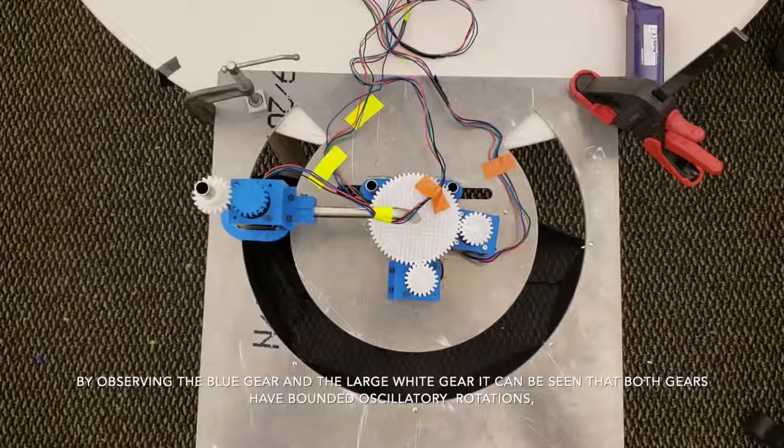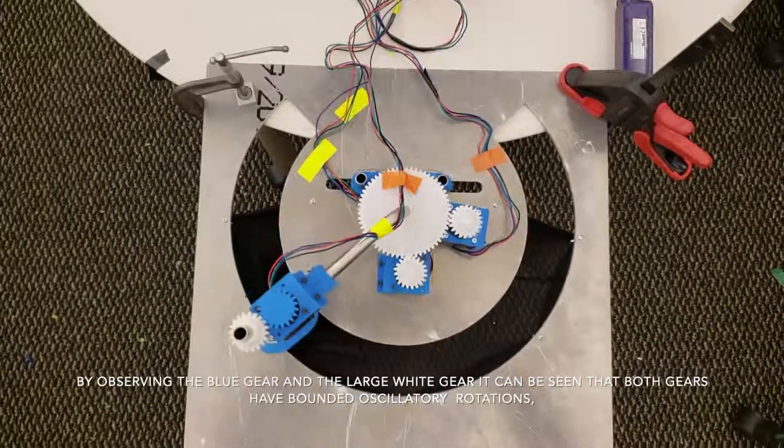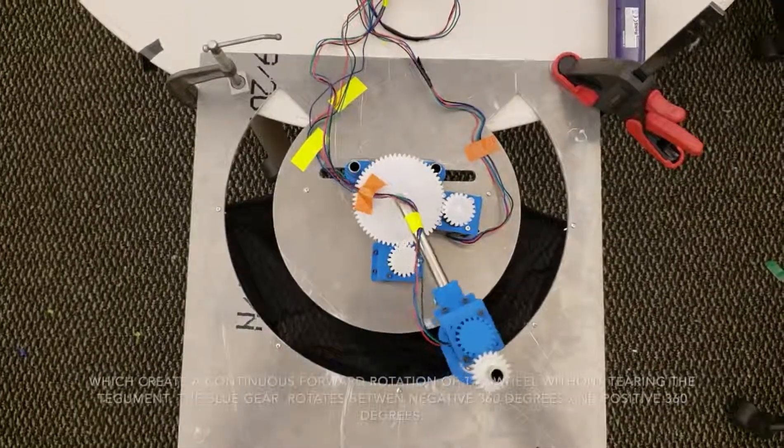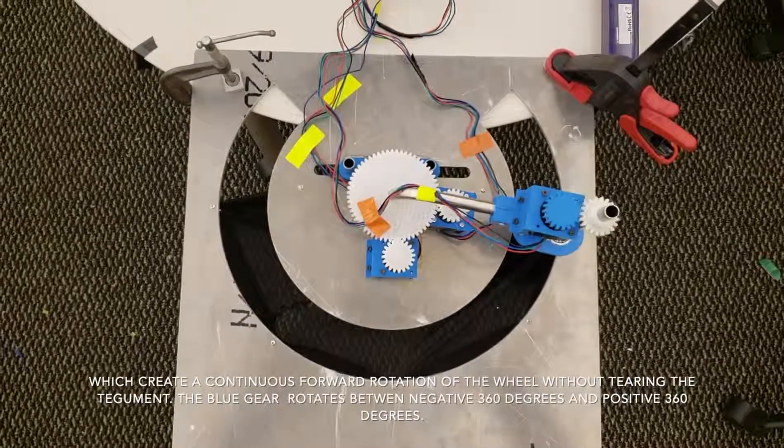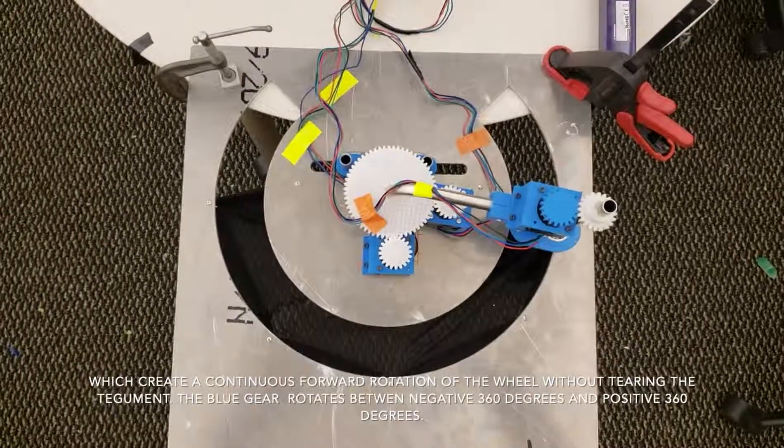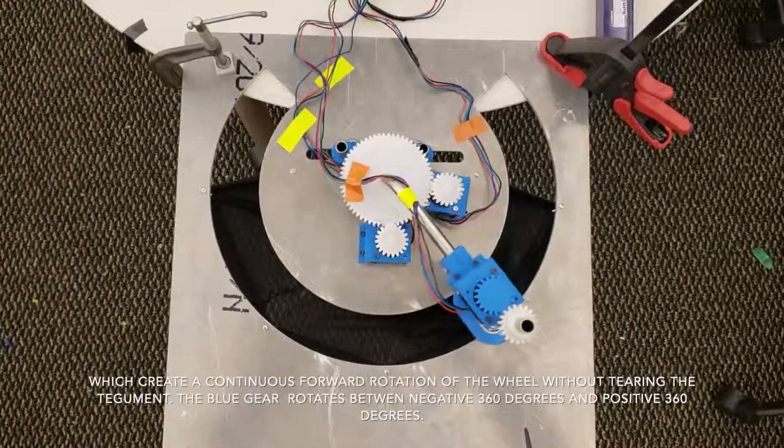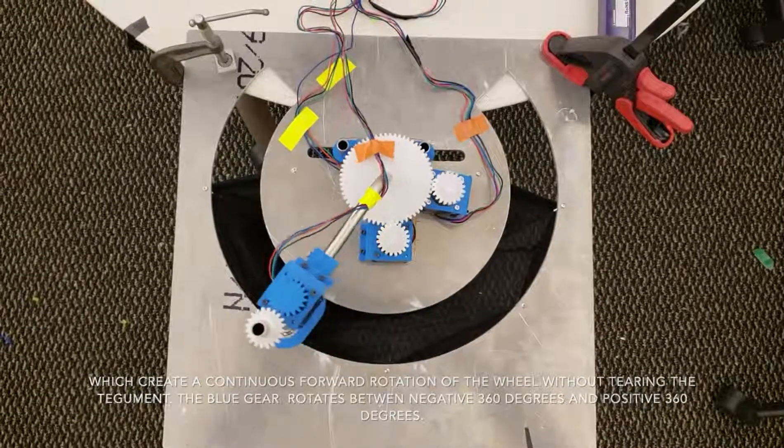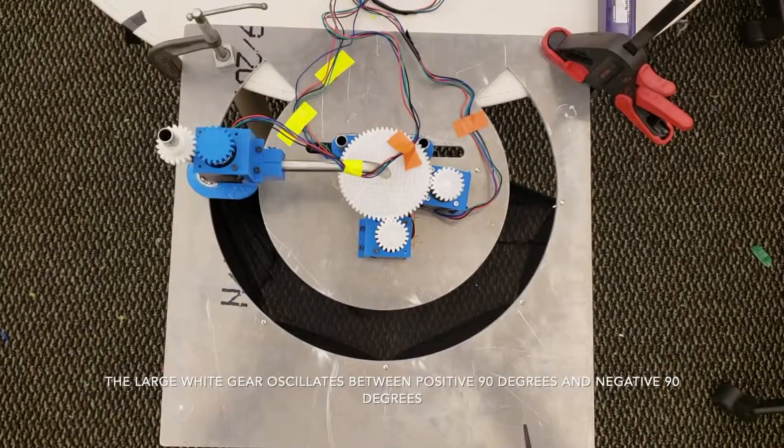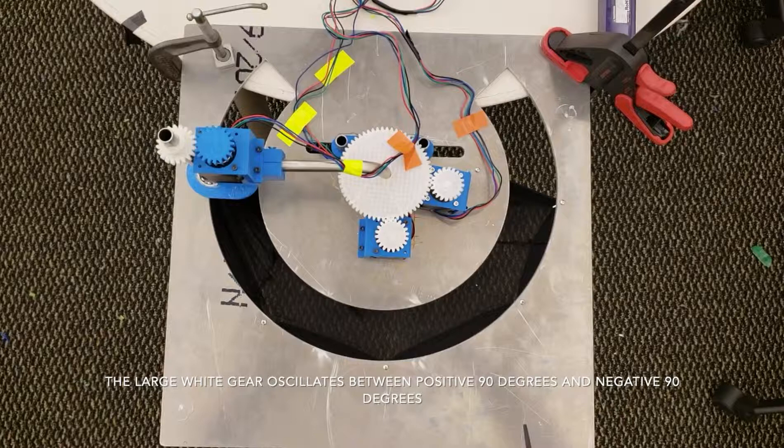By observing the blue gear and the large white gear, it can be seen that both gears have bounded oscillatory rotations, which create a continuous forward rotation of the wheel without tearing the Tegumint. The blue gear oscillates between negative 360 degrees and positive 360 degrees, and the large white gear oscillates between positive 90 degrees and negative 90 degrees.